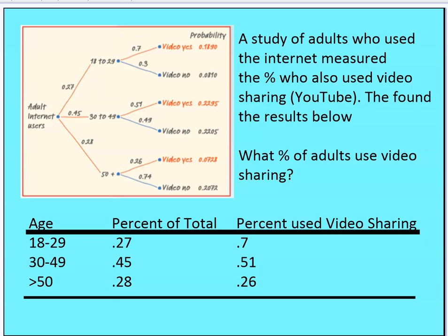Welcome back to our second part of conditional probability and independence. In front of you is a tree diagram, and we're going to use that tree diagram to extrapolate some other information. This is a study of adults who use the internet, measuring the percentage by age segment — 18 to 29, 30 to 49, and above 50 — who used video sharing. Adult internet users account for 27%, 45%, and 28% of the adult population, so these should add up to one.